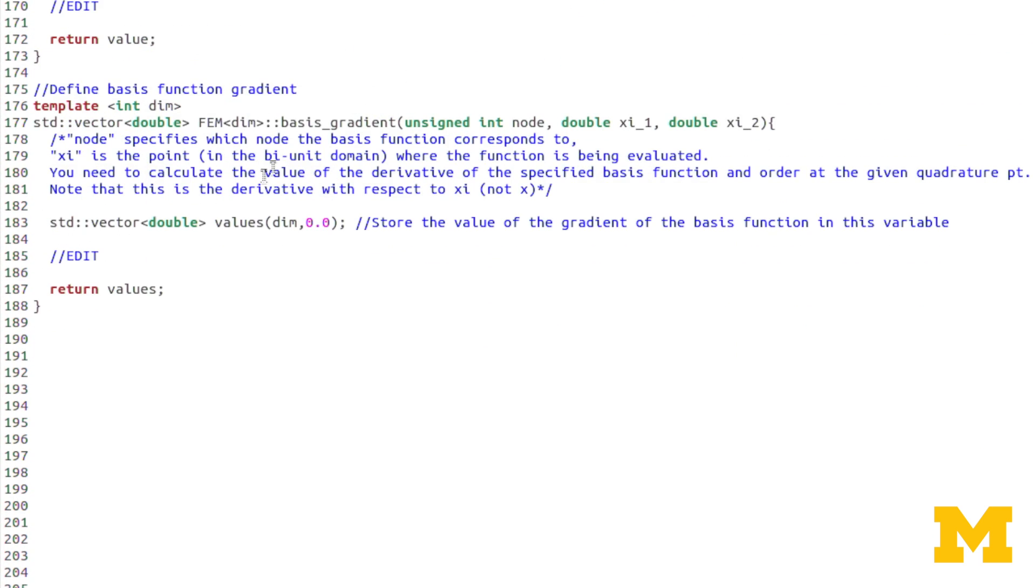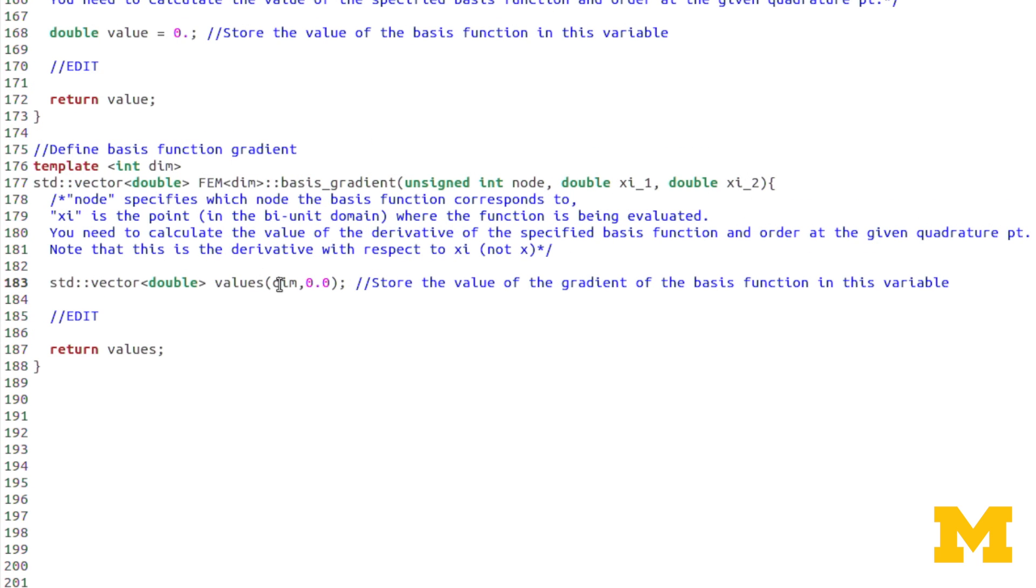Similar with basis gradient, you notice here when I declared this standard vector values, which is what will be returned, I've already set up the length or the size of values to be dim. Of course, dim we define in main.cc, we've defined it to be 2 in this case. So this creates a vector of length 2. But you'll need to go ahead and evaluate the basis gradients at the given nodes for both components of this gradient vector. In some ways, simpler than before, because we're only dealing with linear basis functions. Or rather, bilinear basis functions, I should say, since it's 2D. But of course, since they are in two directions, that is something else for you to consider.